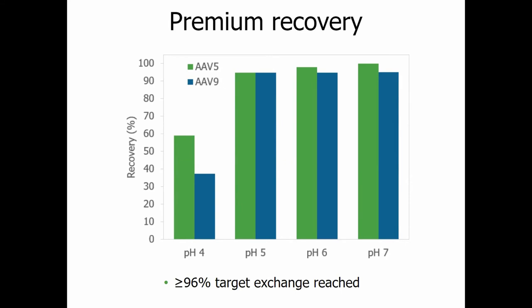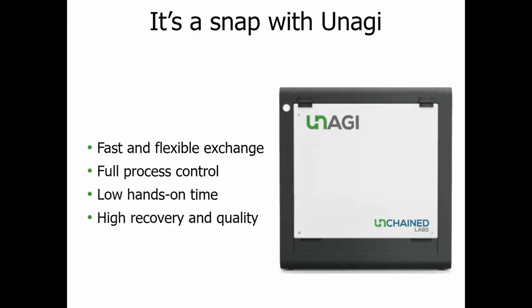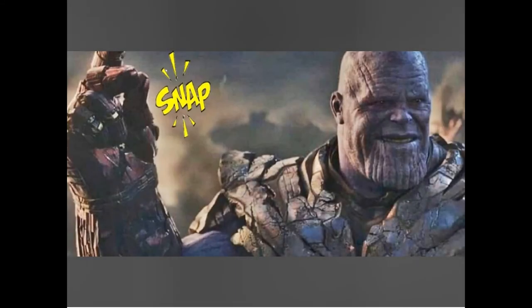Hopefully this gave you enough to see how Unagi can work in your lab. Whether you're working with nucleic acids, LNPs, or AAVs, you can do buffer exchanges and concentrations all in parallel. Unagi offers fast and flexible exchange, full process control with low hands-on time, and high sample integrity and recovery. With that great power, use Unagi for good in your own lab.